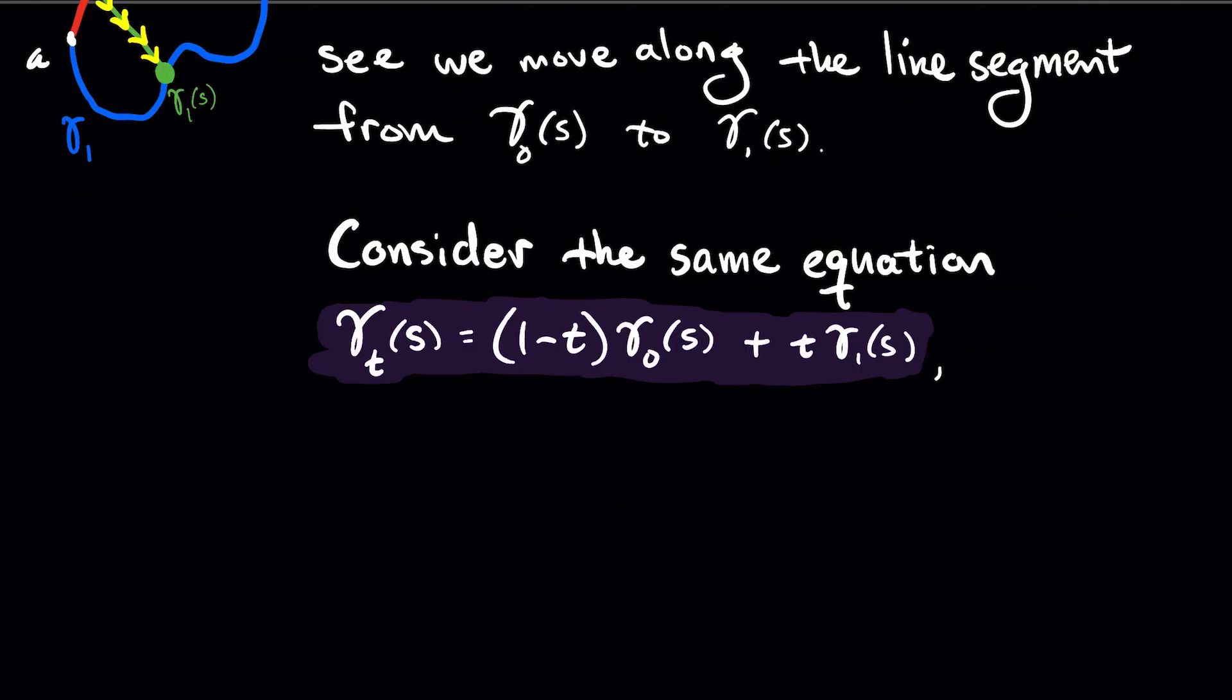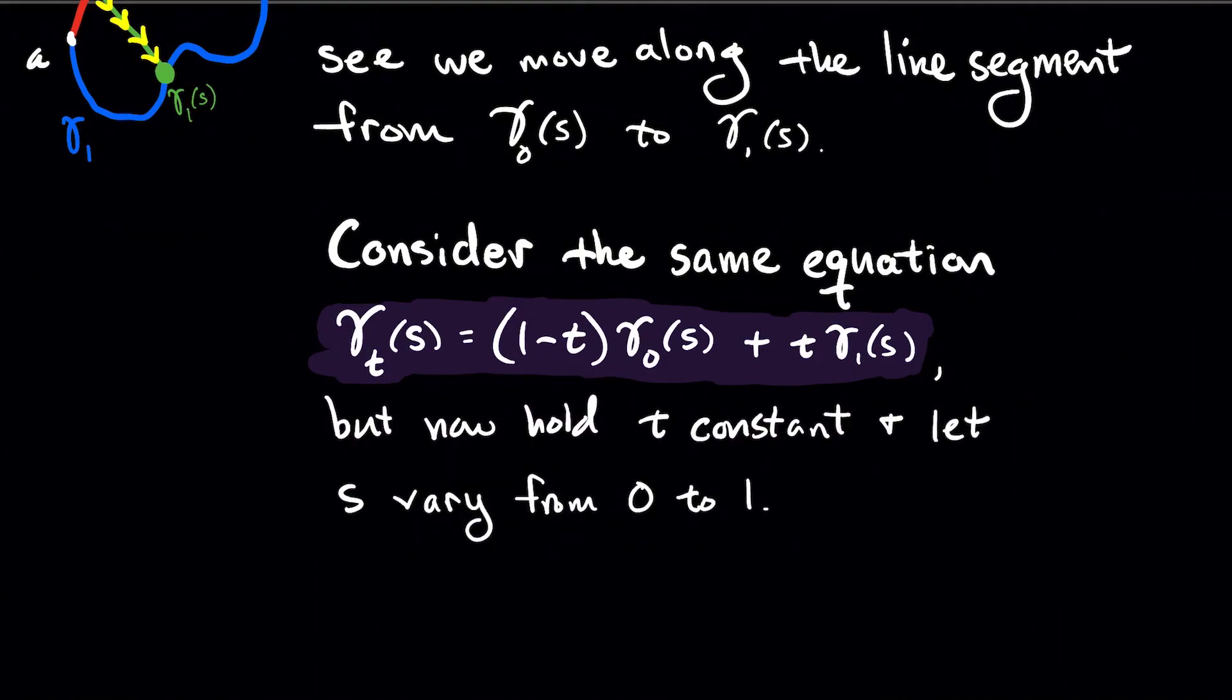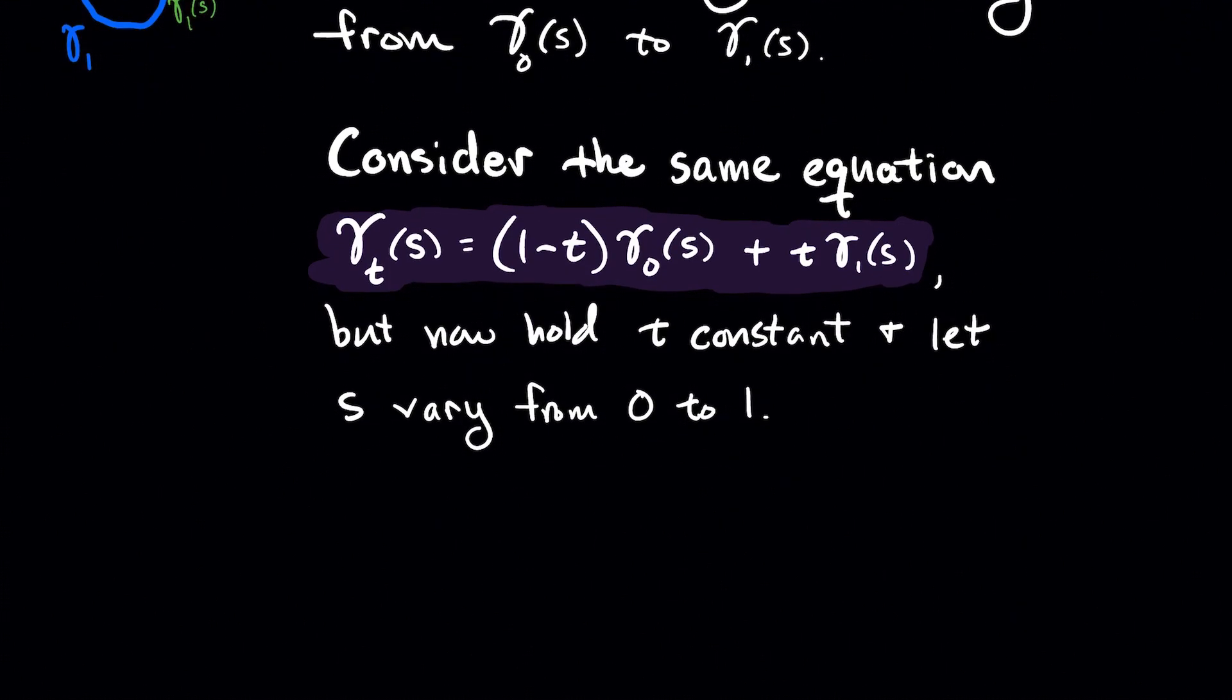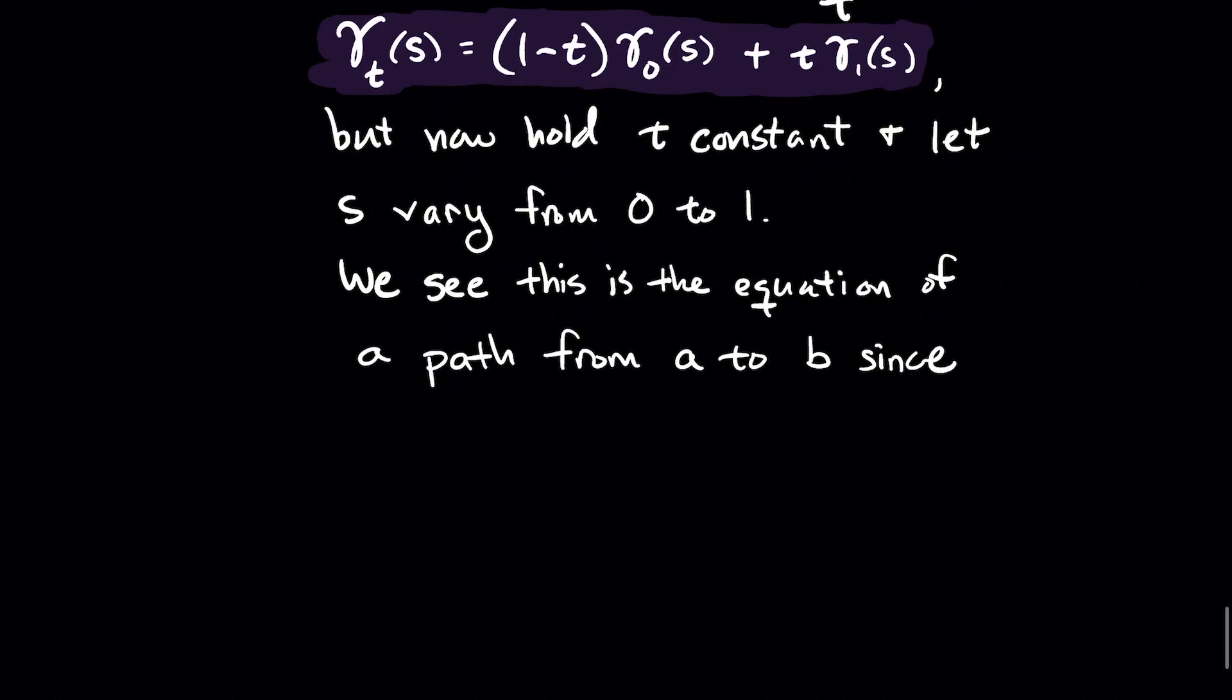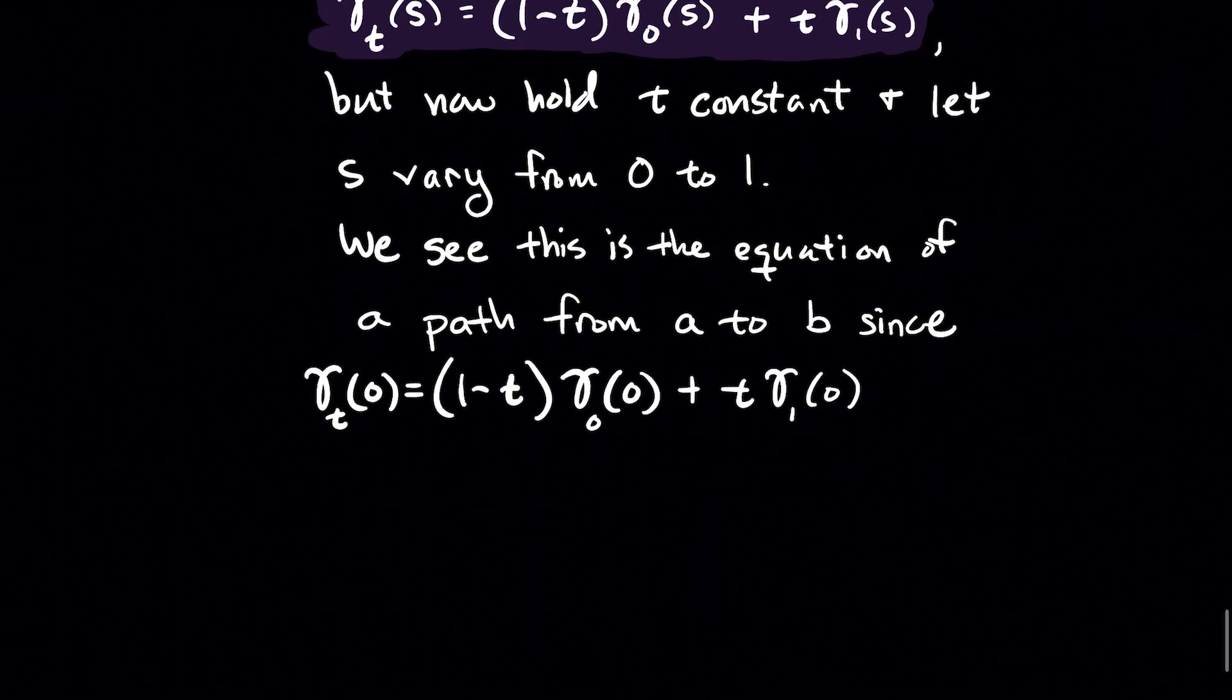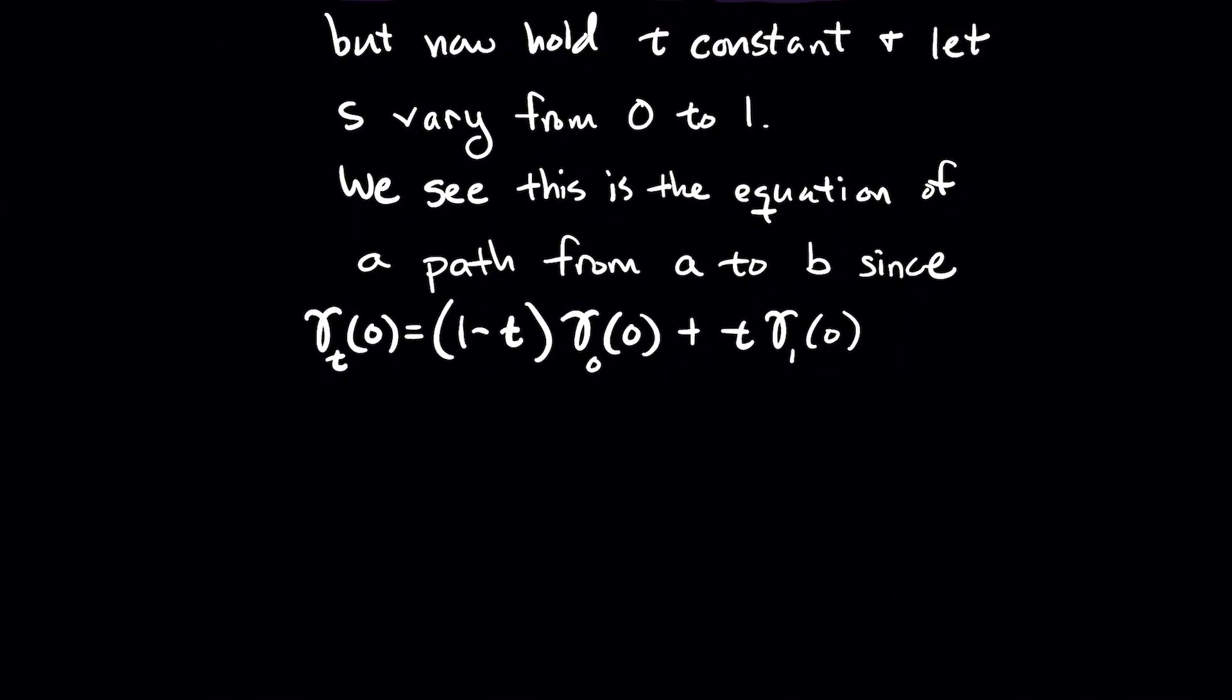Now consider the same equation. So gamma sub t of s is (1-t)gamma naught s plus t times gamma one of s. But now what I want to think about is what if I think about t being constant, so fixed t. And now let's think about s being allowed to vary between zero and one. So we see that this equation is a path from a to b. So let's talk about why. Well, first of all, it's continuous because it's a line segment. Of course, it's continuous. Anyway, so why is it a path from a to b?